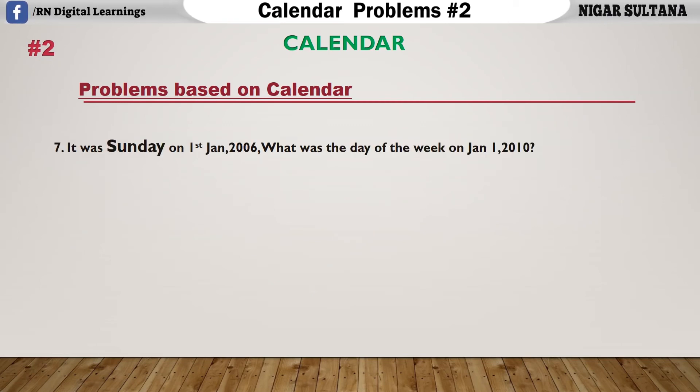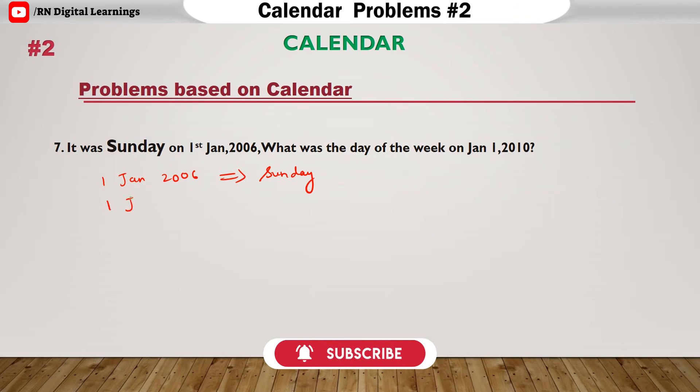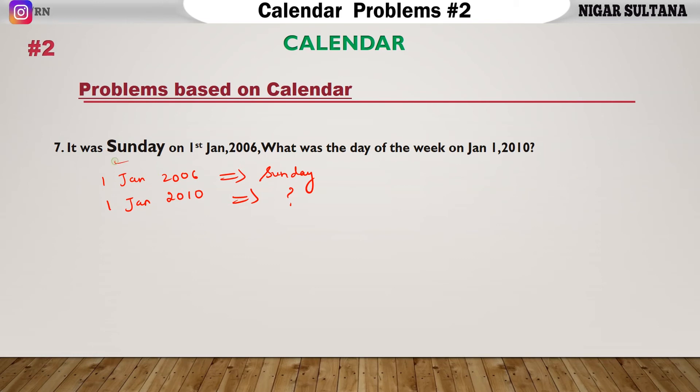Next problem states that it was Sunday on 1st Jan 2006. What was the day of the week on Jan 1st 2010? 1st Jan 2006 is Sunday. Now, they are talking about 1st Jan 2010. How to calculate this? It is the starting of the month of 2006. This is a normal year. How many odd days will be there? There will be one odd day.